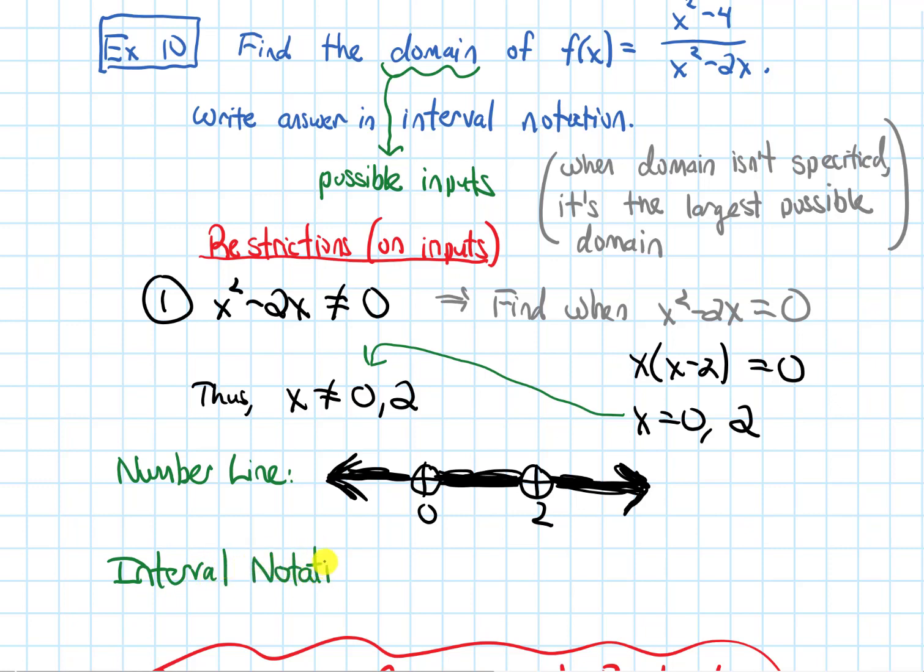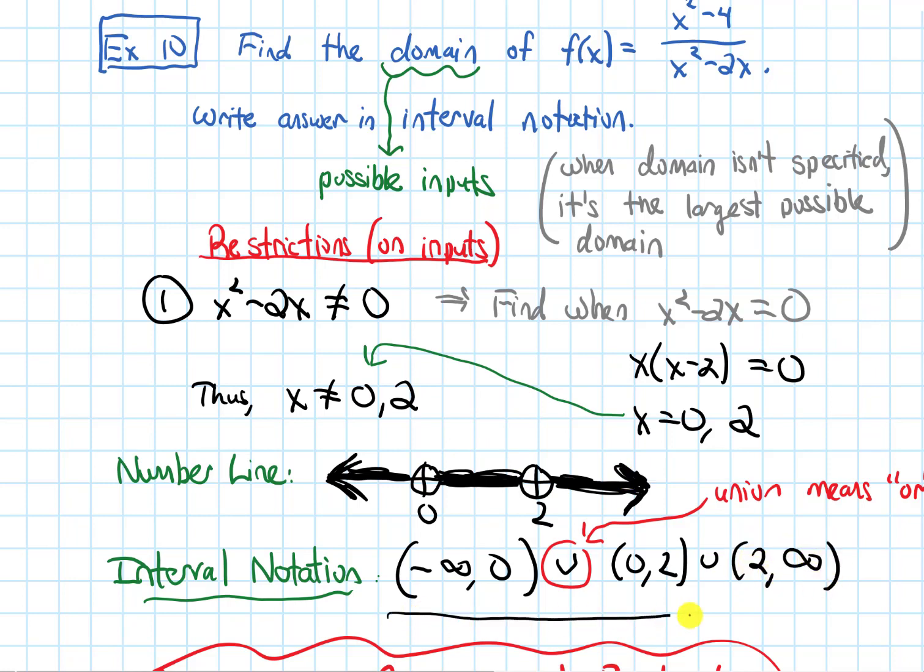In interval notation, the first interval goes from negative infinity to 0. At negative infinity, we always write a parenthesis because it's not an actual number. Because 0 is not included, I put a parenthesis there. When I have multiple intervals like this that I need to describe, I'm going to join them with the union symbol. This symbol means, in words, it's like the word 'or'. Either I'm going to be in that first interval, or I can be in this next interval, which is 0 to 2. Parenthesis at both of those, because I can't be at 0 and I can't be at 2. But one more union, and the third interval is from 2 to infinity. And that is our domain.